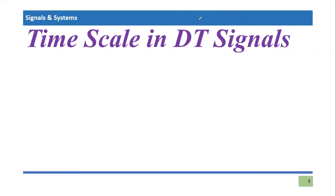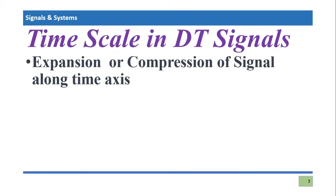Let's talk about discrete time signal time scaling — it is going to be either expansion or compression of the signal. When you time scale a discrete time signal, it will either expand — the same information will be represented in more time dimensions — or if you compress the signal, the same amount of information is going to take less time.